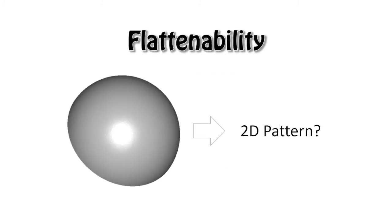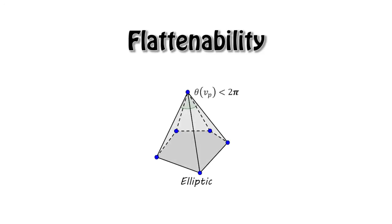However, 3D surfaces like this half-sphere that are not flattenable cannot be fabricated by self-folding structures. The half-sphere is not flattenable because its vertices are in elliptic shapes, which means the sum of incident angles around a vertex is smaller than 2π.